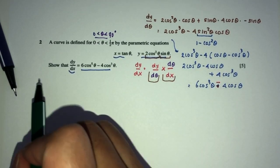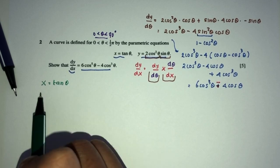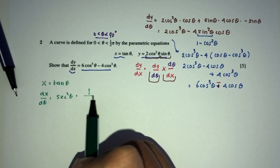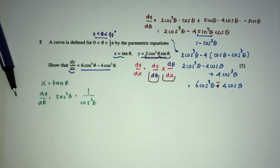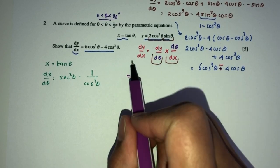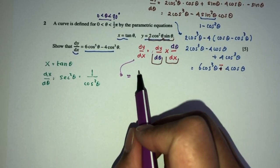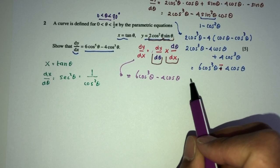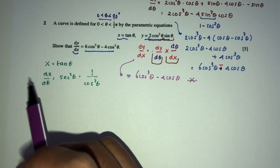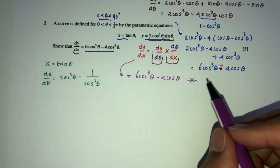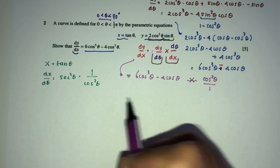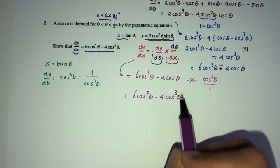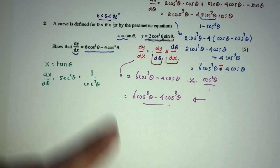Finally, we have to find the value of dx by d theta. x is equal to tan of theta, so dx by d theta should be sec squared theta, which is 1 over cos squared theta. To find dy by dx, replace back in your main equation. dy by d theta is 6 cos cubed theta minus 4 cos theta. Now multiply by d theta by dx — we have dx by d theta, so we flip it upside down — it will become cos squared theta over 1. So you will have 6 cos to the 5th theta minus 4 cos cubed theta, which is shown as required for question number 2.